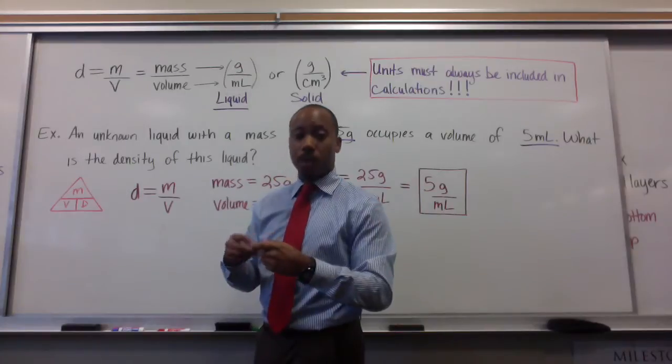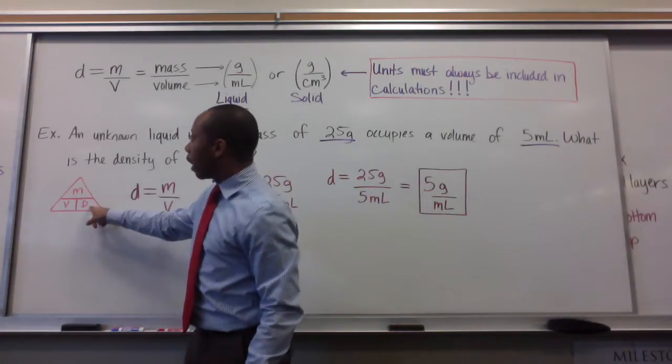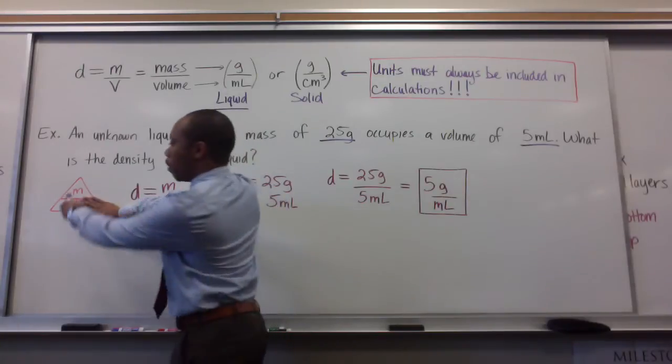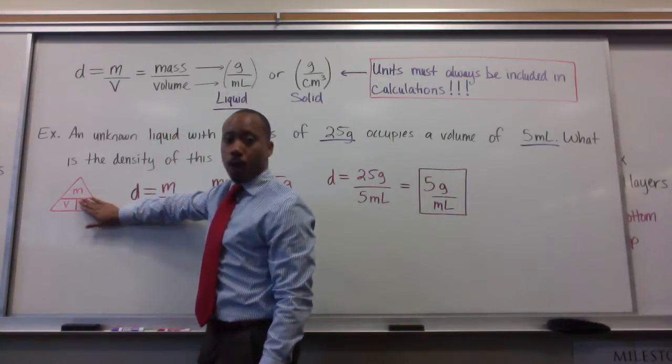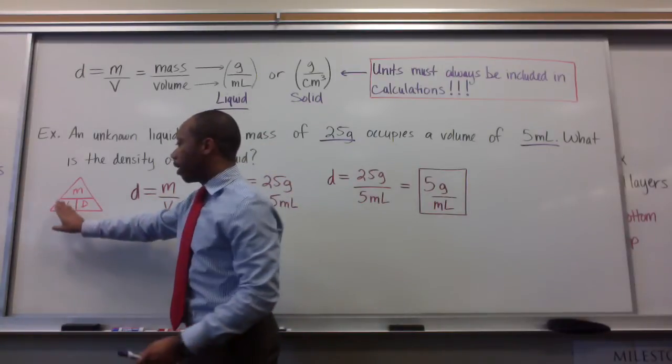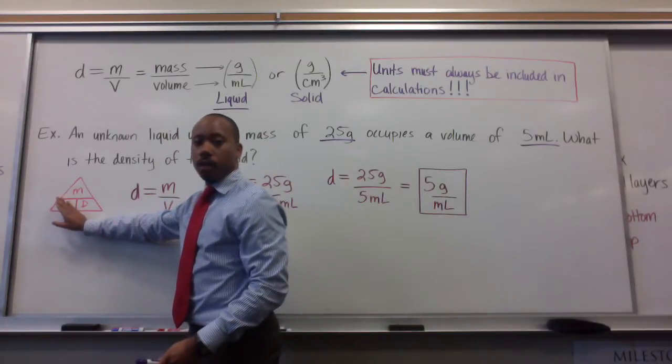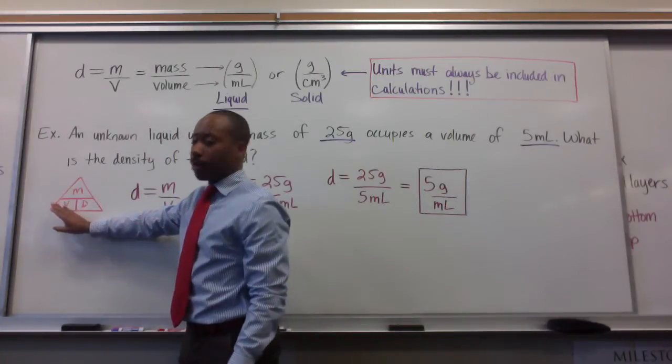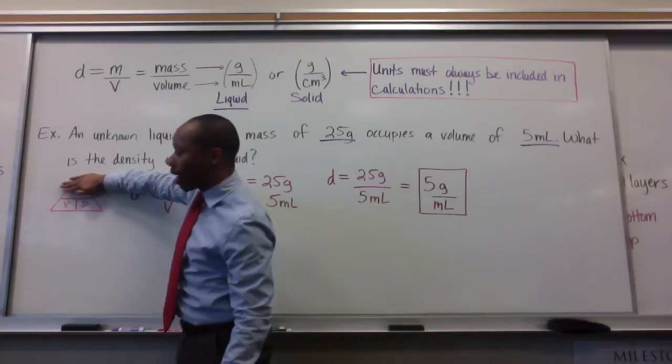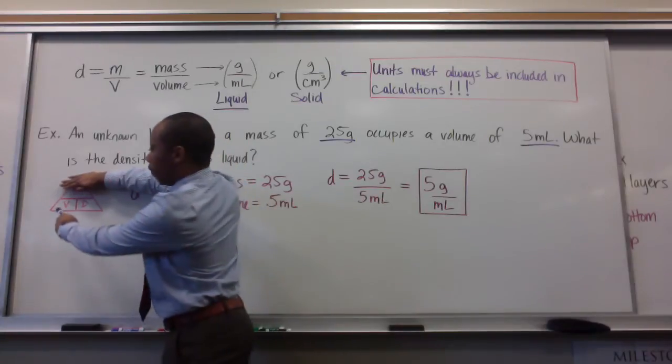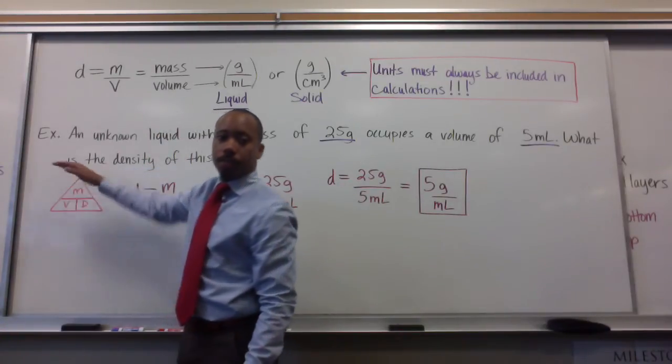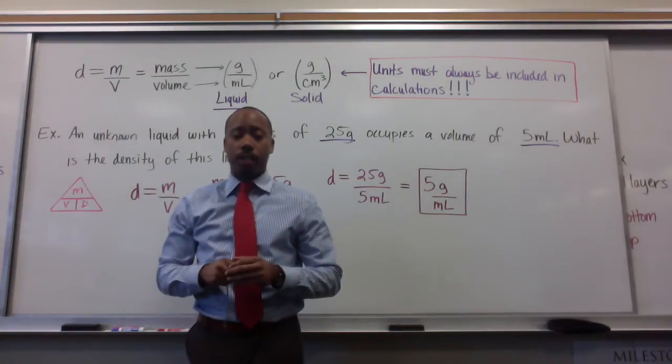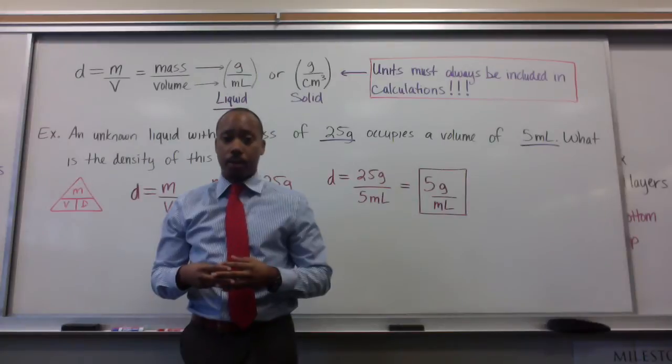When you're solving for density, as we are here, cover up density. Density is equal to mass divided by volume. When you're solving for volume, cover up the V here. Volume is equal to mass divided by density. When you're solving for mass, cover up the variable for mass. Mass is equal to volume times density. That's an easy way to use this triangle to manipulate your equation and solve for a given variable.